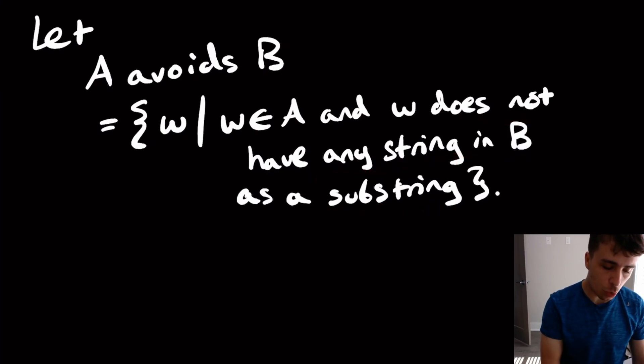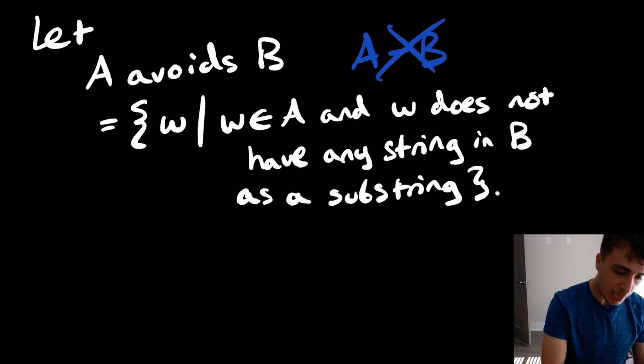So that's not quite the same thing as, for example, it's not the same thing as A set minus B or something. So this is not right, because it's not saying that A doesn't have any string in B, it's a stronger condition that no string in A can have any substring of it as something in B.